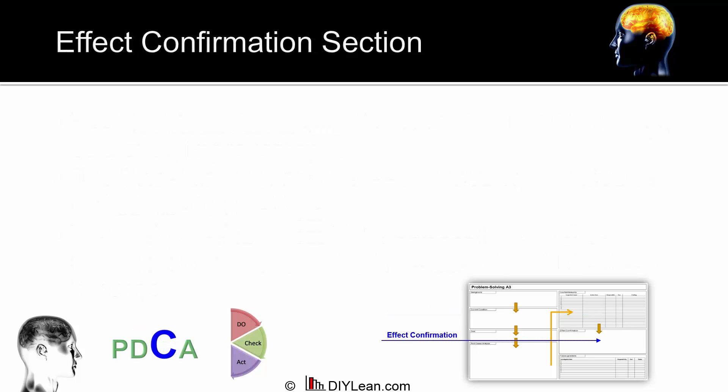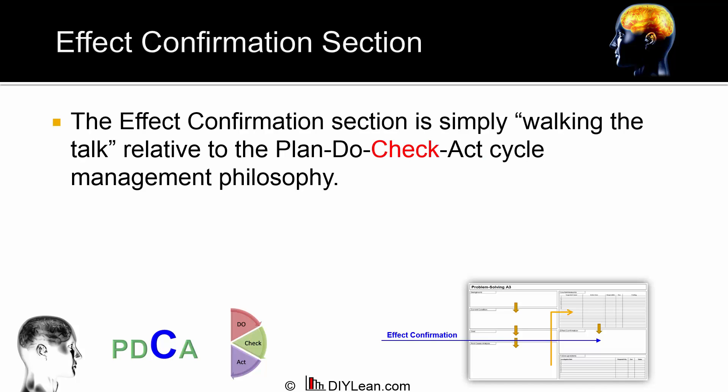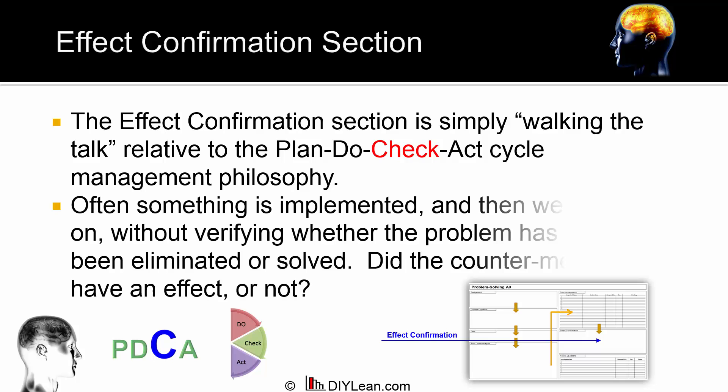The effect confirmation section is the area where the team is holding itself accountable. This accountability is accomplished by measuring how we are doing in meeting our goal. Effect confirmation helps to answer the question of whether the actions that we are taking are having the desired effect — are they moving the needle? For instance, if this A3 was focused on reducing the company's inventory, the effect confirmation section might show a graph of the dollar value of inventory on a monthly basis, along with another graph showing the monthly inventory turns KPI.